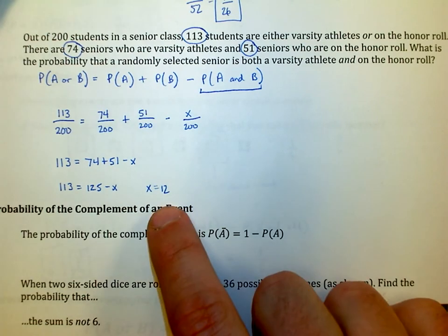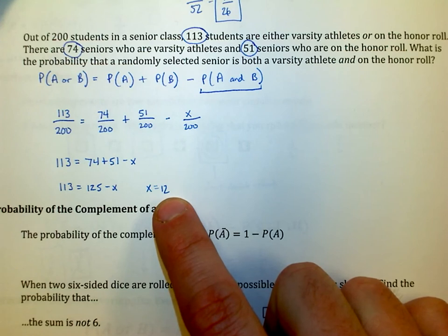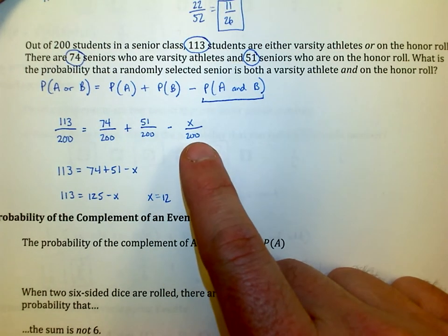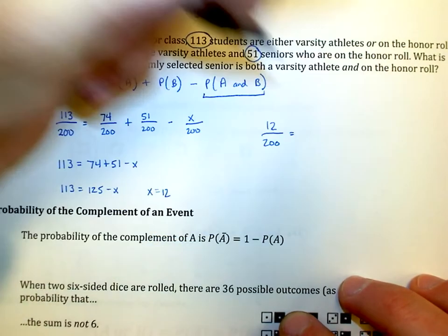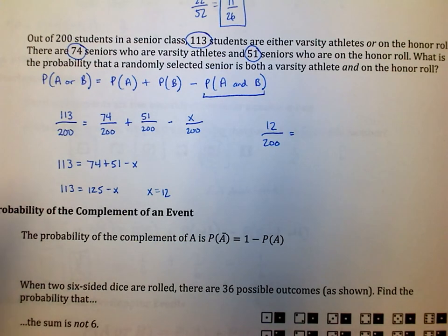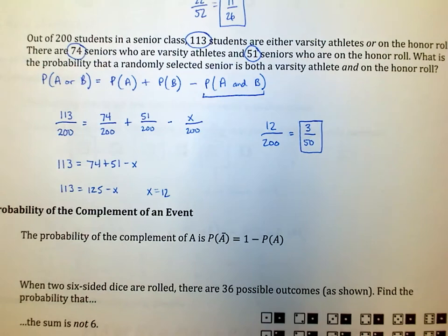Now remember, it's not that 12 is the answer. It's a probability, it's got to be a number less than one. It means that 12 out of the 200 are both, so my answer is 12 out of the 200 would be the probability. I put that in my calculator, do 12 out of 200, and turn it into a fraction. It says there's a 3 in 50 chance that that student is both on the varsity athlete and on the honor roll.